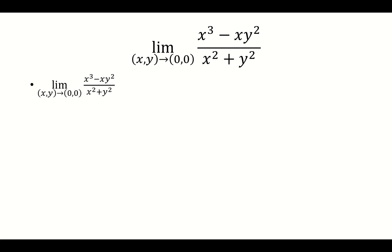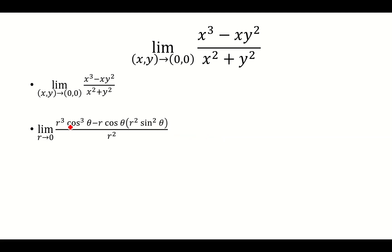Let's convert this into polar coordinates. So x is equal to r cosine theta and y is equal to r sine theta. In the numerator we have r cubed cosine cubed theta minus r cosine theta times r squared sine squared theta. In the denominator we have x squared plus y squared, which is equal to r squared.